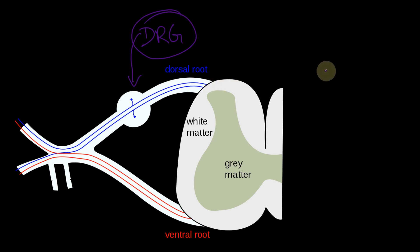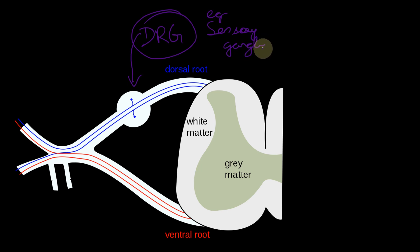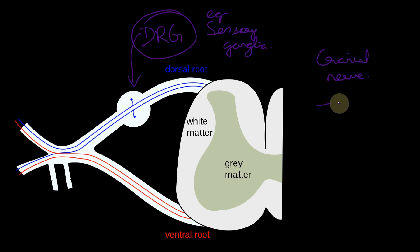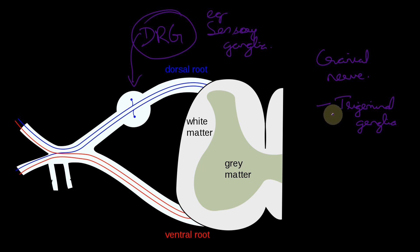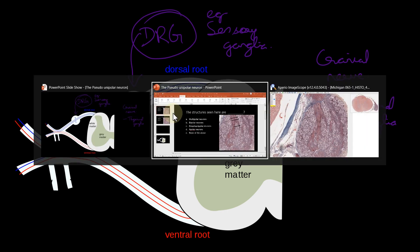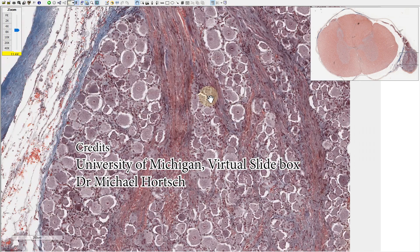You can also see pseudo-unipolar neurons in other sensory ganglia. The dorsal root ganglion is an example of a sensory ganglion. Most importantly, you also need to know cranial nerve sensory ganglia — most importantly the trigeminal ganglia — and other ganglia such as the facial nerve ganglion, glossopharyngeal ganglion, and vagal nerve ganglion. All sensory ganglia, including the dorsal root ganglia, contain pseudo-unipolar neurons.